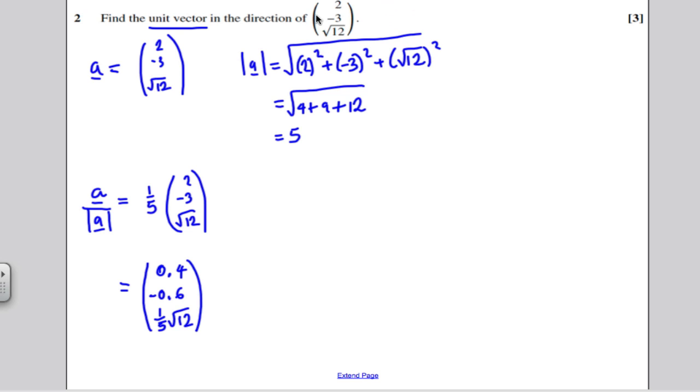Just to recap what you do, you work out the magnitude of that particular vector, and you divide the whole vector by the magnitude, so that you have made its magnitude 1, i.e., you have created a unit vector.